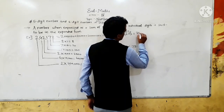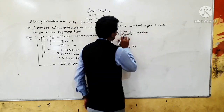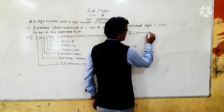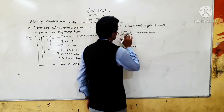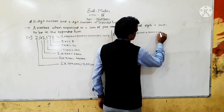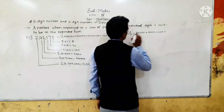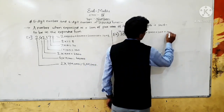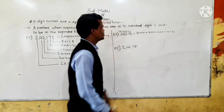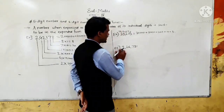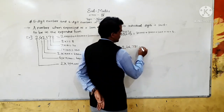So write 30,000. Then 8 comes at the thousands place, so the place value of 8 is 8,000. Then 2 comes at the hundreds place, so the place value of 2 is 200. Then 1 comes at the tens place, so its value is 10. And 5 comes at the ones place, so its value is 5. So the number is 38,251.